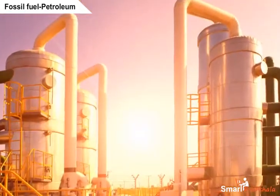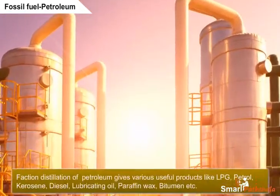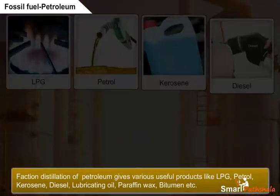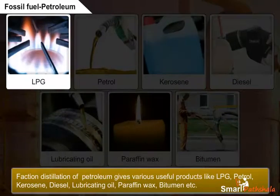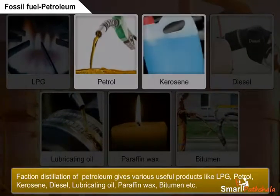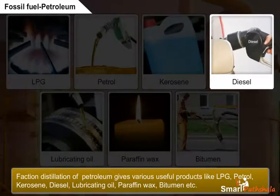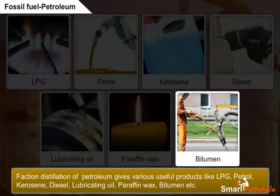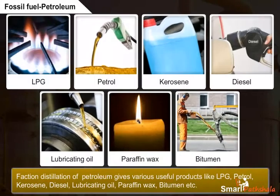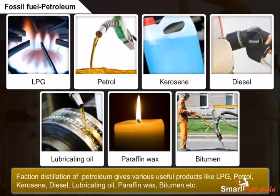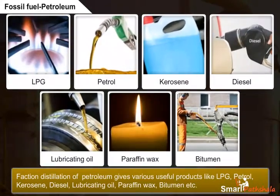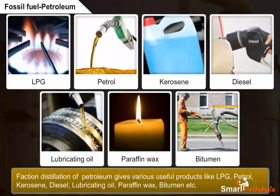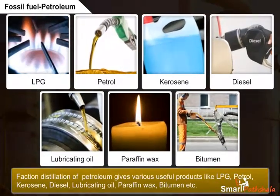Processing of petroleum is called fractional distillation, and in this process, various useful products like LPG, petrol, kerosene oil, diesel, lubricating oil, paraffin wax, bitumen, etc. are separated based on their boiling point. Separation of these substances from petroleum is called refining, and it takes place in petroleum refineries.